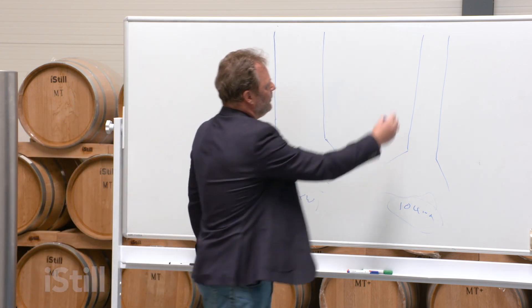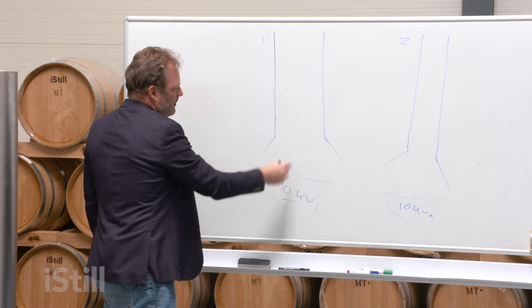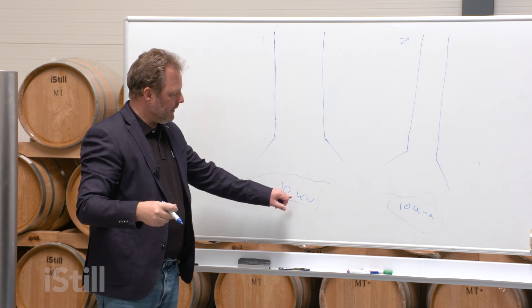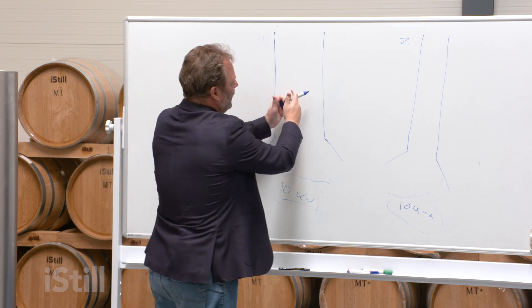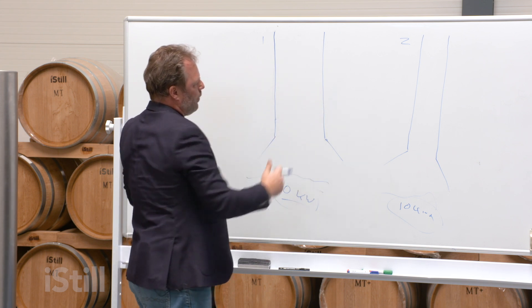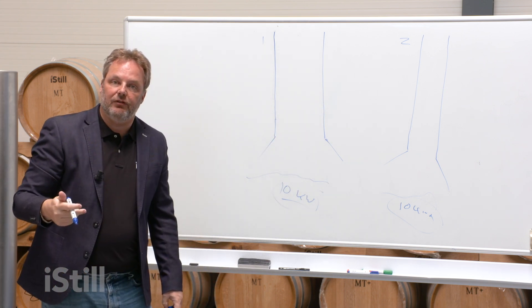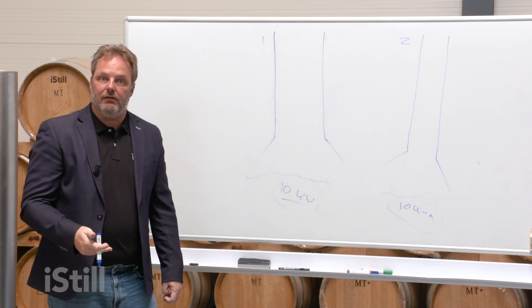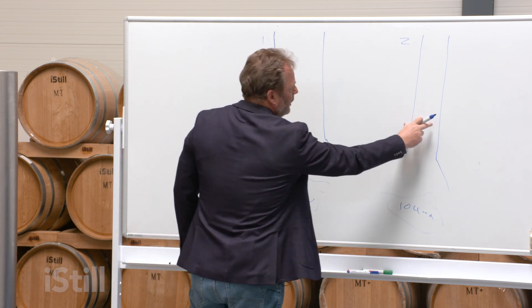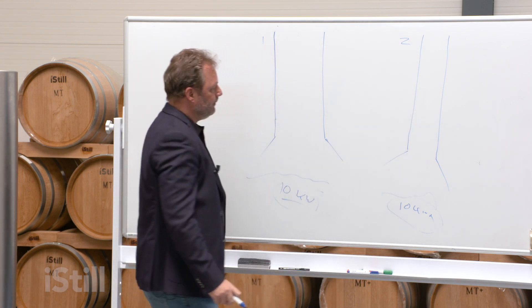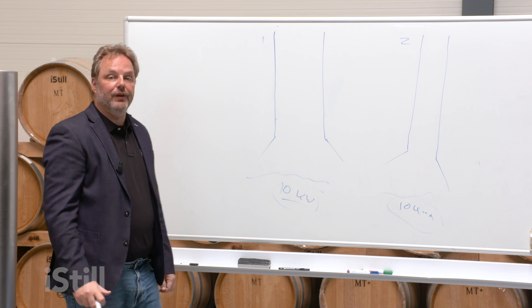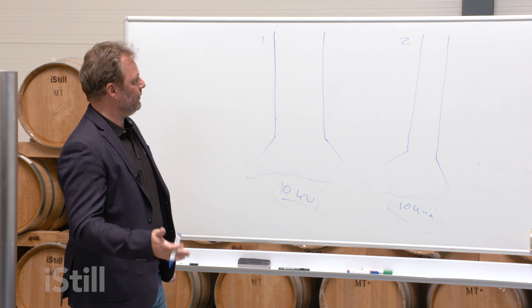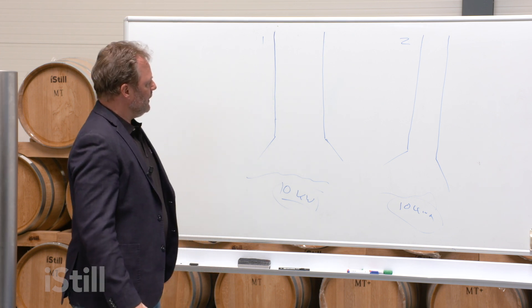So basically we're saying we are creating in column one and in column two exactly the same amount of vapors—10 kilowatts. If this column is twice as wide, what happens to the vapor speeds relative to the vapor speeds in column number two? Let's phrase it the other way around: if this column is only half the diameter from column number one, what happens to vapor speeds?